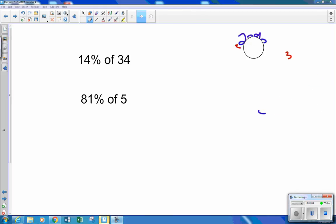So I have here 14% of 34. I need to change 14% to a decimal. So I move it two decimal spaces over, 0.14. In math, of means times. So 0.14 times 34.